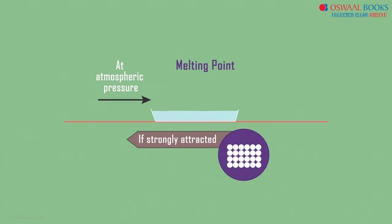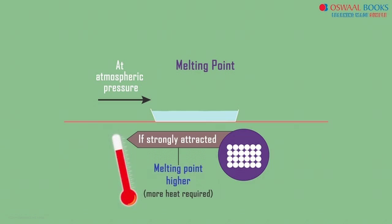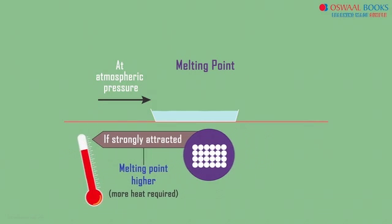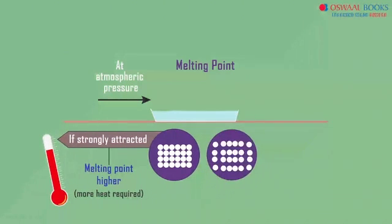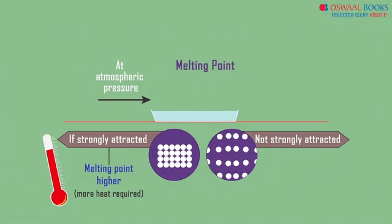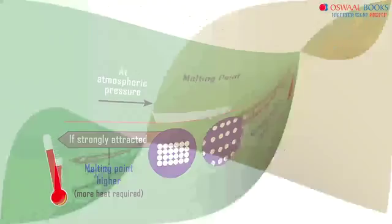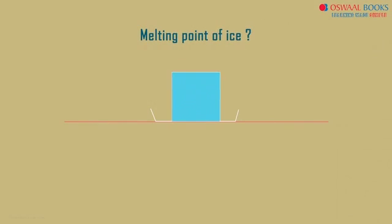If the particles are very strongly attached, the melting point will be higher as more heat would be required. If the particles are not so strongly attached, then the melting point will be relatively lower. Do you know what the melting point of ice is? It is 273.16 Kelvin.